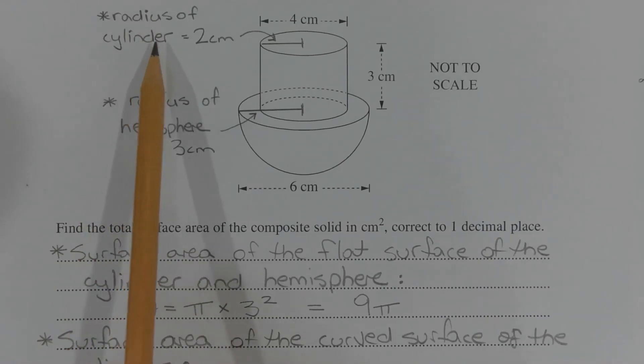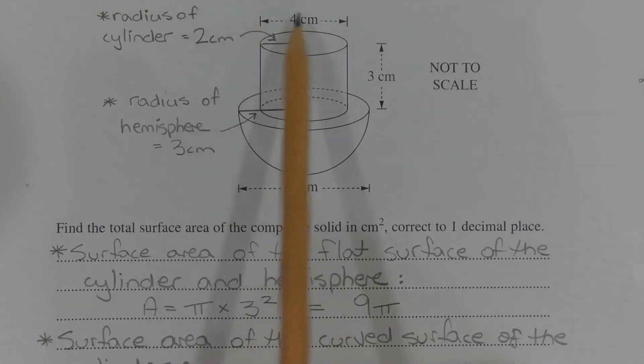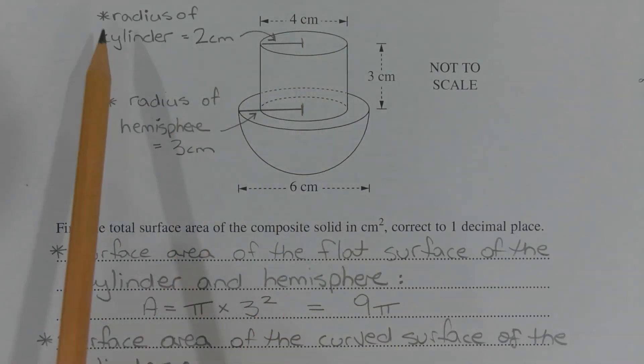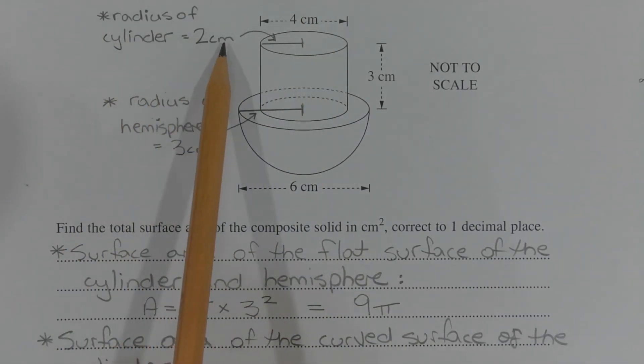Firstly, work out the radius of the cylinder and the hemisphere, since the surface area of both shapes depends on the radius and not on the diameters that are given. The diameter of the cylinder is 4 cm, and if we halve that, the radius of the cylinder is 2 cm. The radius of the hemisphere is half of 6 cm, which is 3 cm.